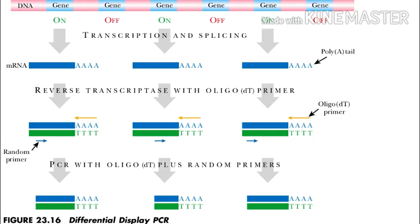This method of PCR allows the researcher to compare two different growth conditions on many different genes, rather than just one gene as in RT-PCR. As in RT-PCR, the RNA is extracted from the cells and the corresponding cDNA is made by the use of reverse transcriptase.